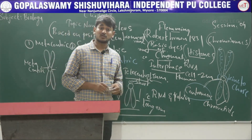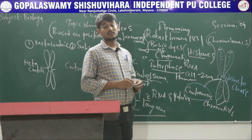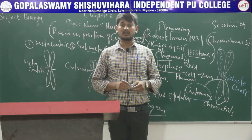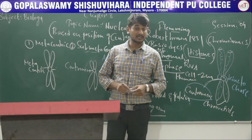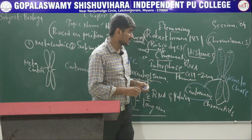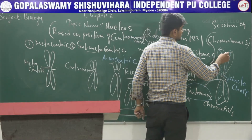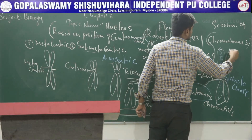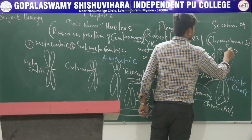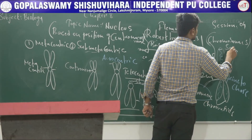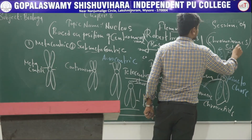Sometimes chromosomes show a non-staining secondary structure at a constant location, and this gives the appearance of a small fragment. This is called a satellite.